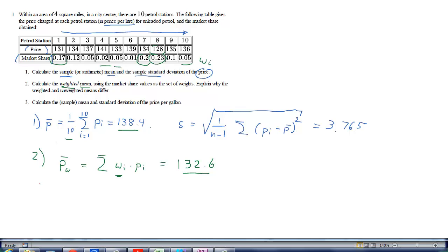And what that tells us is that there's a tendency of the bigger petrol stations to sell the petrol cheaper. Because if we weight by the market share, we get a smaller average than if we were to use the unweighted average. So that was question 2. Let's go to question 3. Here the question is calculate the sample mean and standard deviation, but for the price per gallon.